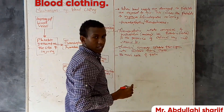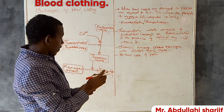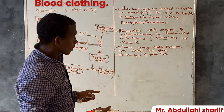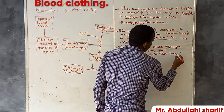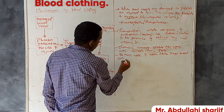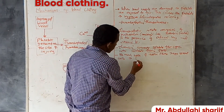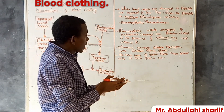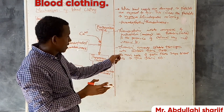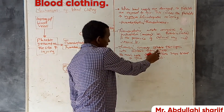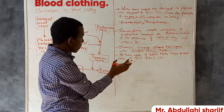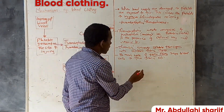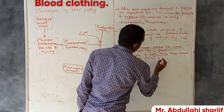Because at that moment the blood vessels are damaged and blood is oozing, the meshwork of the insoluble fibrin fibers traps blood cells to form a fibrin clot.